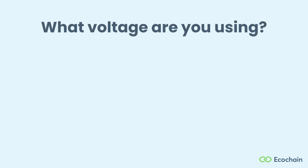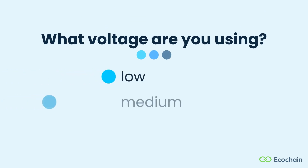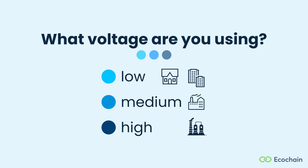After determining what kind of electricity dataset you should select, consider the voltage of the electricity you are using. EcoInvent provides options for low, medium, and high voltage. Typically, households and offices use low voltage, while medium voltage is used for industrial connections. High voltage may be used for specific or energy-intensive applications.